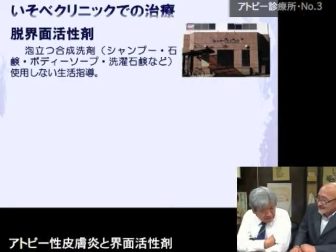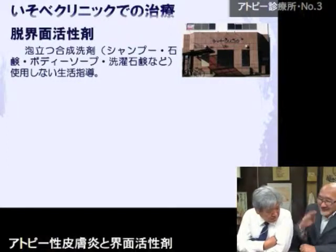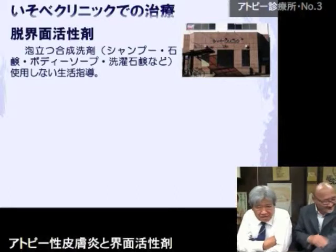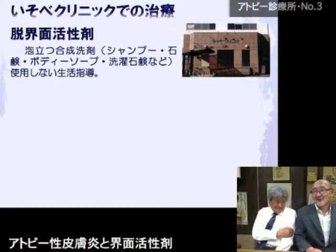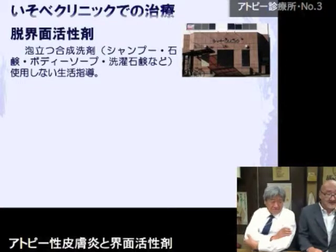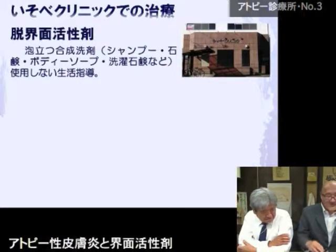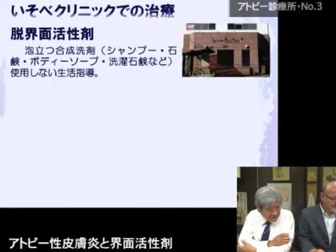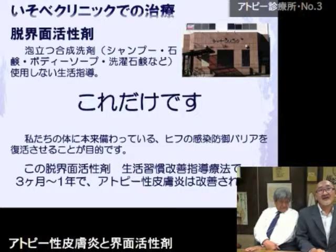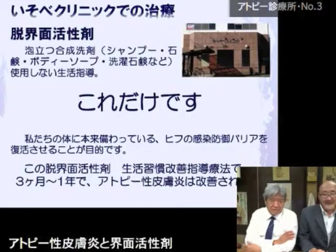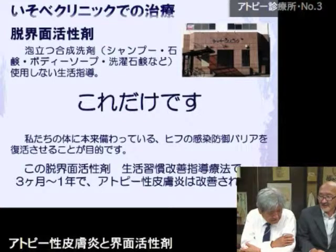特別なお薬が出るわけではなく、対処療法としては痒み止めと、ステロイドのリバウンドへの対処のみです。基本的に磯部クリニックの治療は、スキンバリアを復活させるための脱界面活性剤の生活指導のみと言っていいですか。はい。シャンプーや石鹸も泡立つものから切り替え、洗濯石鹸まで切り替えると、早くて3ヶ月、遅くても1年ぐらいで効果が出てきます。